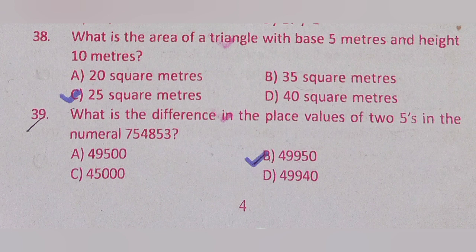Question 39: What is the difference in the place values of the two fives in the numeral 754,853? Option A: 49,500, Option B: 49,950, Option C: 45,000, Option D: 49,940. The correct answer is Option B: 49,950.